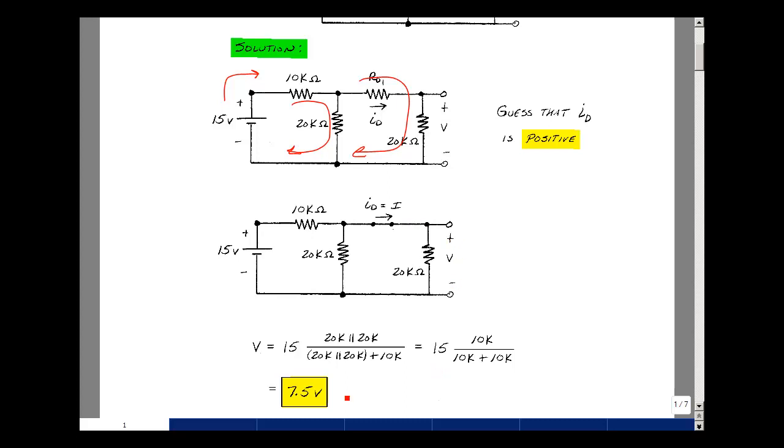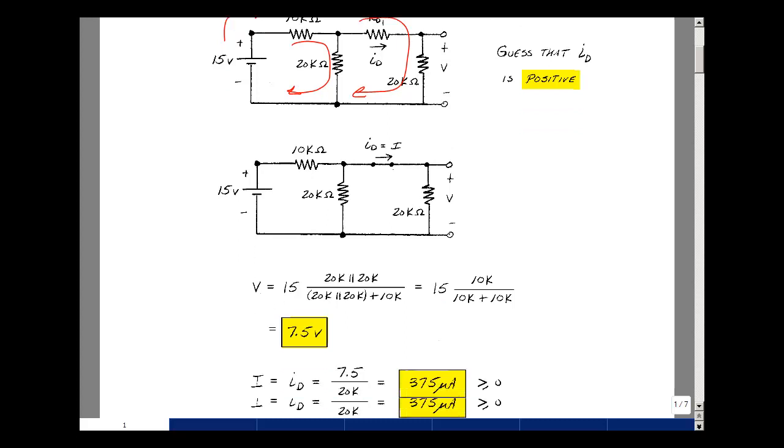Basically, we get half of 15 volts, which is 7.5, and now let's find the current in the diode.